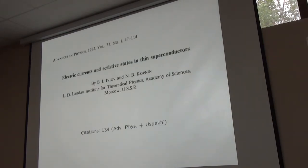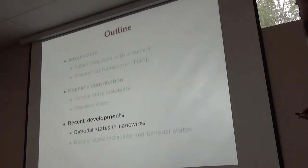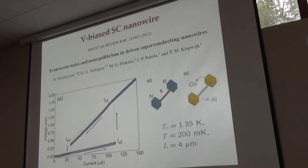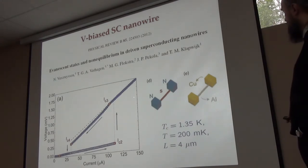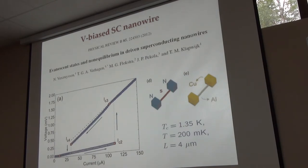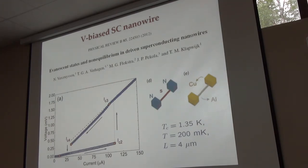There is a review on these issues published in UFN — Advances of Physics. Now, in the rest of this talk, I briefly describe what's going on in similar situations. This is the work where they looked at an NSN junction of finite width, with a finite voltage applied. The main difference is that now people work well below the critical temperature, so no time-dependent Ginzburg-Landau equation can be applied.